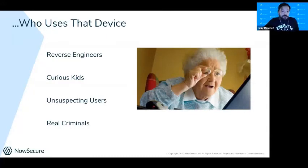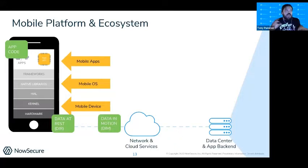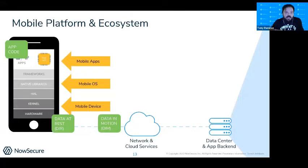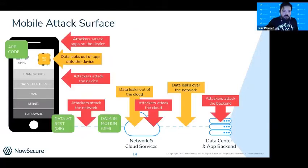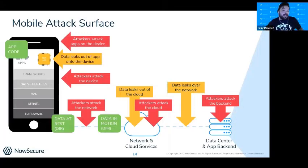These are all things you don't have control over as someone creating an app or helping that app's development team. When we break down the attack surface for mobile, we start thinking about app code, data at rest — data stored on the device — data in motion, and backend API components, including cloud or first-party backends.